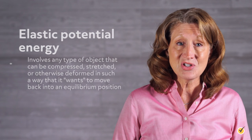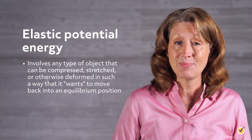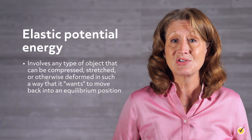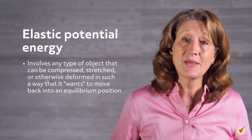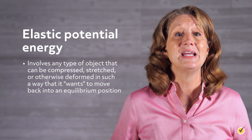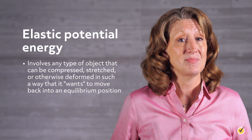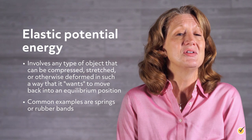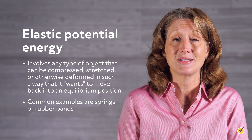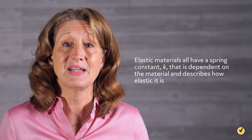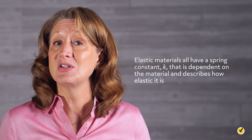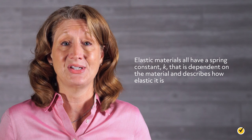Another type of potential energy is elastic potential energy. Elastic potential energy involves any type of object that can be compressed, stretched, or otherwise deformed in such a way that it wants to move back into an equilibrium position. Common examples are springs or rubber bands. Elastic materials all have a spring constant, k, that is dependent on the material and describes how elastic it is.